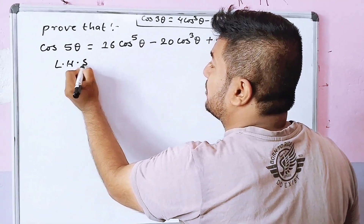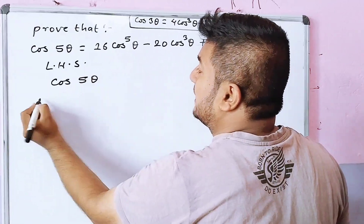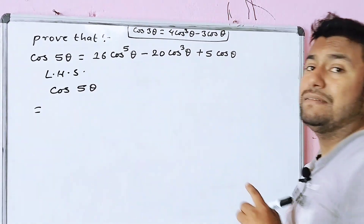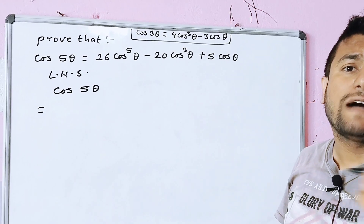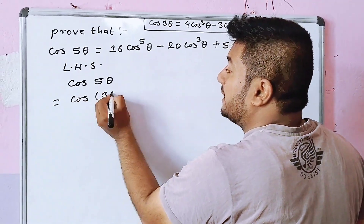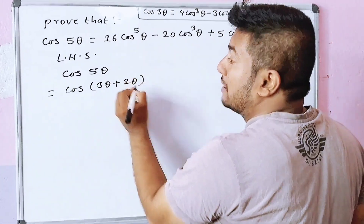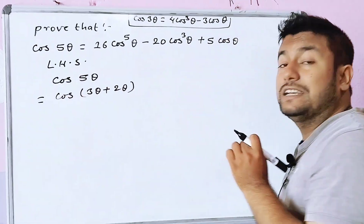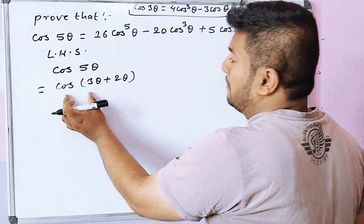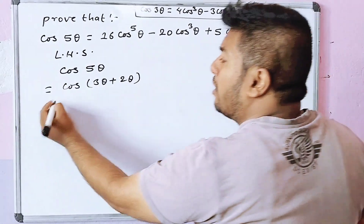I will show you cos 5 theta. In this cos 5 theta, I will write it as cos(3 theta plus 2 theta). So let me show you the cos A plus B formula.